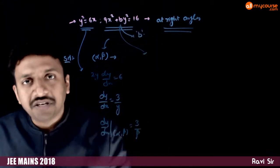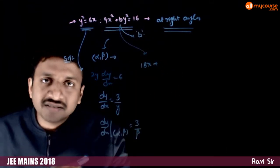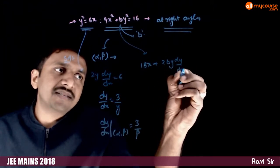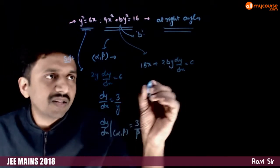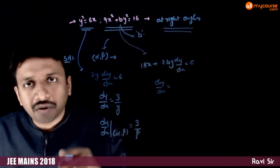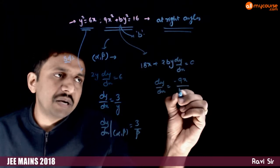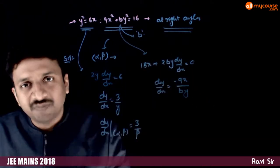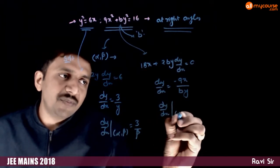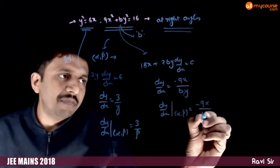Next, let us try to differentiate this. 18x plus 9 times 2x is 18x plus 2by dy by dx is equal to 0. dy by dx is equal to, if you send everything on to that side and cancel the 2, you get minus 9x by by. What is dy by dx at the point alpha beta? Minus 9 alpha by b beta.